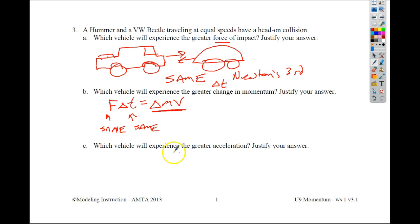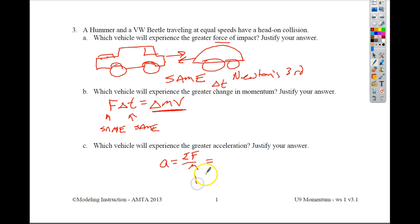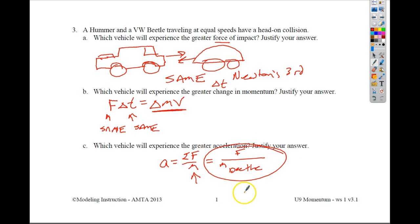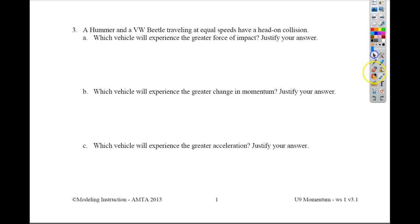Which vehicle will have a greater change in acceleration? The Beetle will have the biggest change in acceleration. Acceleration equals the sum of the forces over the mass. Because the force is the same for both, the one with the smallest mass — the Beetle — will have the bigger change in acceleration.